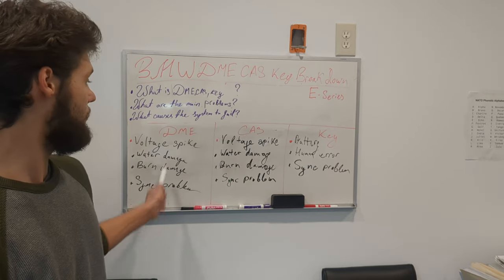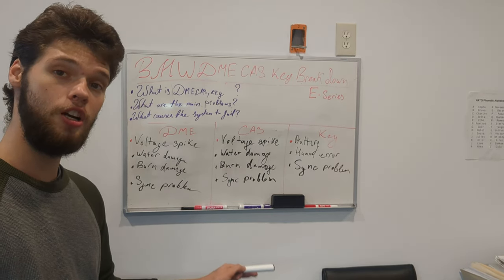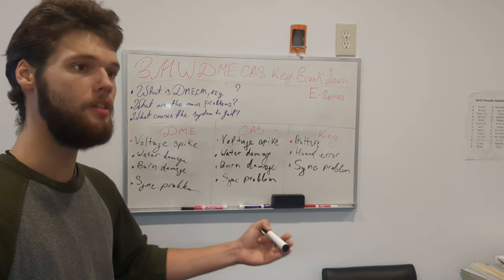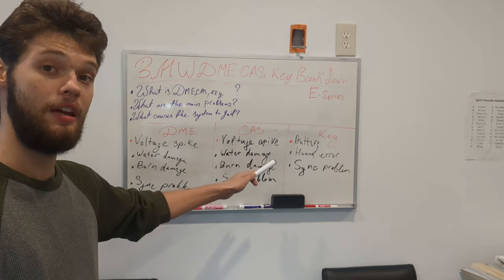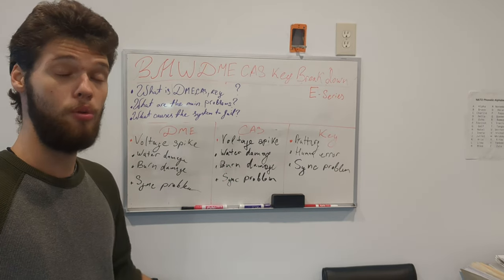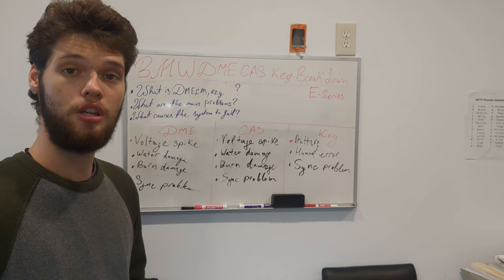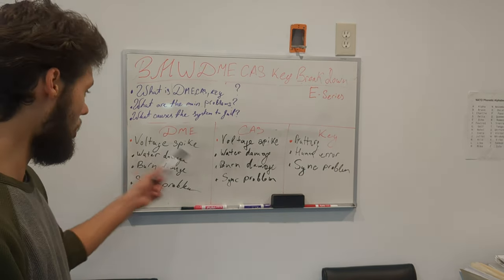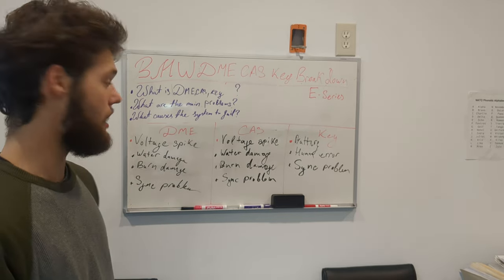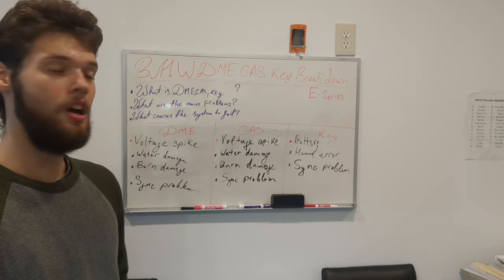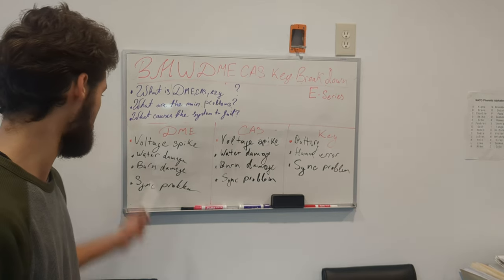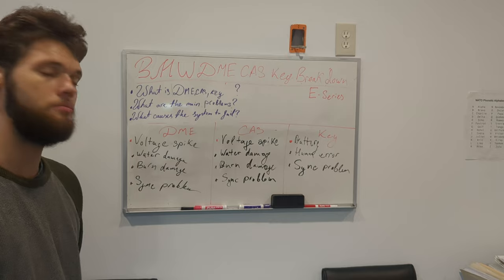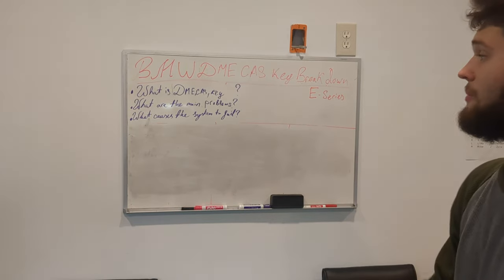So, pretty much these are the main problems that these modules have. Whenever one of these problems happens in your car, referring to the formula that I did just like a second ago, it will pretty much mean that you will not be able to start your car. Let's talk about now what causes all of these problems inside of the DME, CAS, and the key, what causes the voltage spike, what causes the water damage, burn damage, and synchronization problems as well. What causes the system to fail?